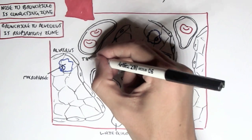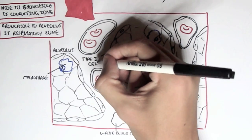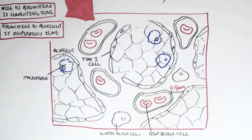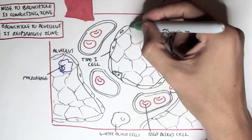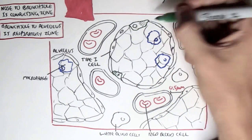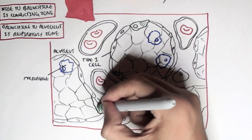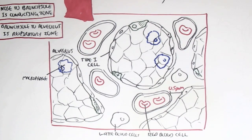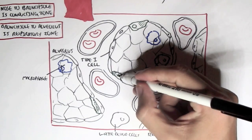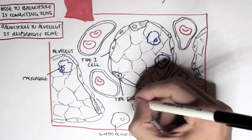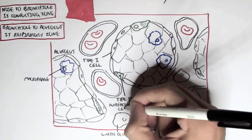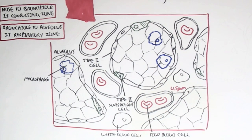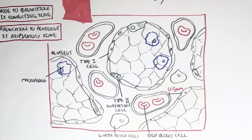The alveolus itself consists of two main types of cells. The type 1 alveolar cell, which is basically a simple squamous epithelial cell — it is thin, which allows for easy exchange of gas, easy exchange of oxygen and carbon dioxide. The second type is known as the type 2 alveolar cell, or the surfactant cell. Surfactant cells secrete surfactant, and they reduce surface tension in the alveolus, which means that the membranes can separate more easily, allowing for easier gas exchange.